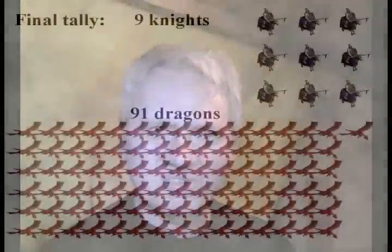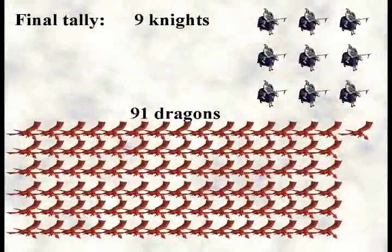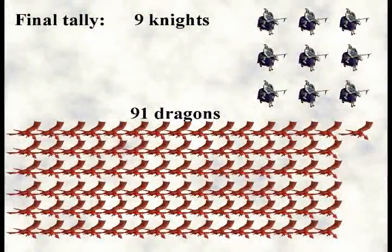Now I've done 10 battles and the dragons have won every time. A naive frequentist would say that we estimate p to be 0, which means that the knights can't win. I'll get back to this later. Let's skip ahead to the final grisly results. At the end of the battle there remains 91 well fed dragons and 9 badly burnt but very relieved knights.